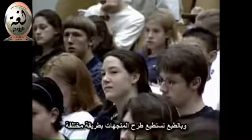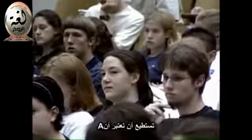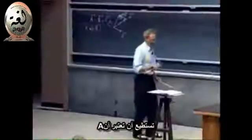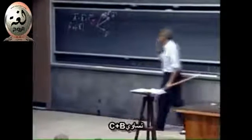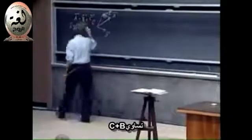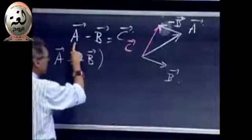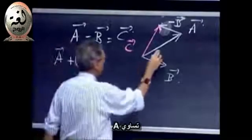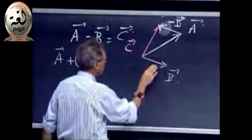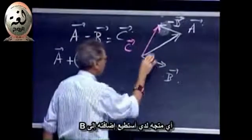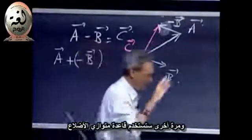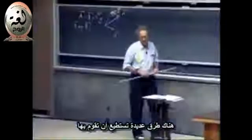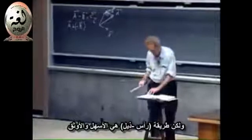And of course, you can do it in different ways. You can also think of it as C plus B is A, right? You can bring this to the other side. You can say C plus B is A. In other words, which vector do I have to add to B to get A? And then you have the parallelogram technique again. There are many ways you can do it. The head-tail technique is perhaps the easiest and the safest.